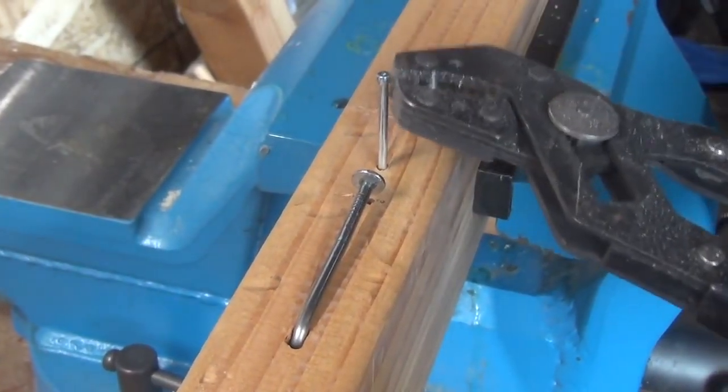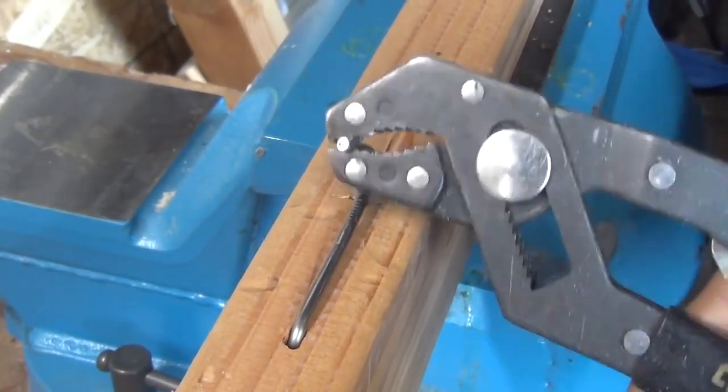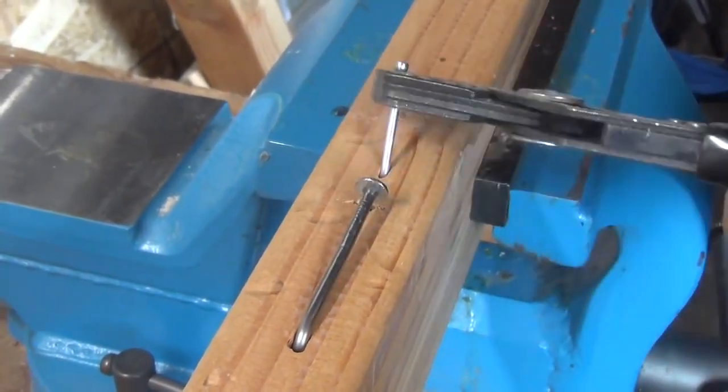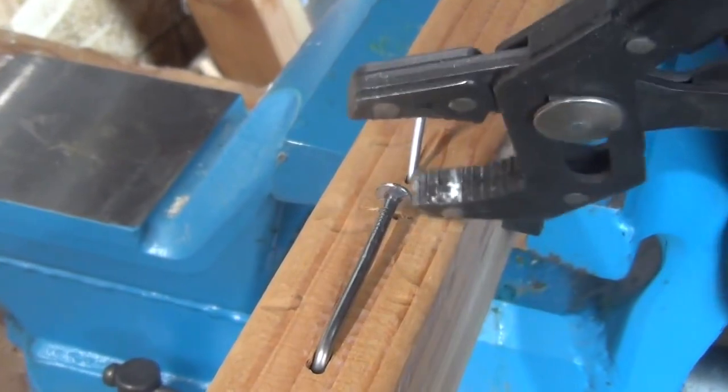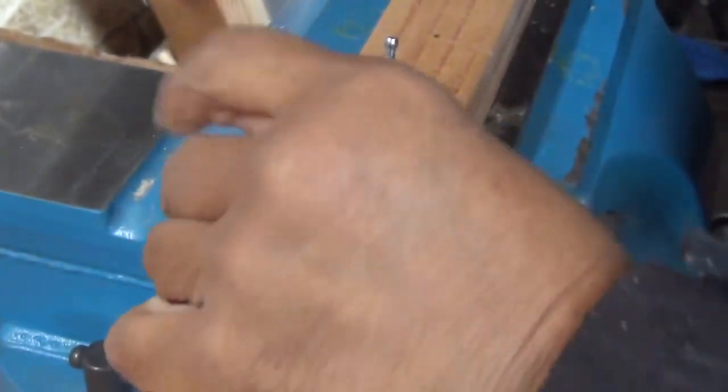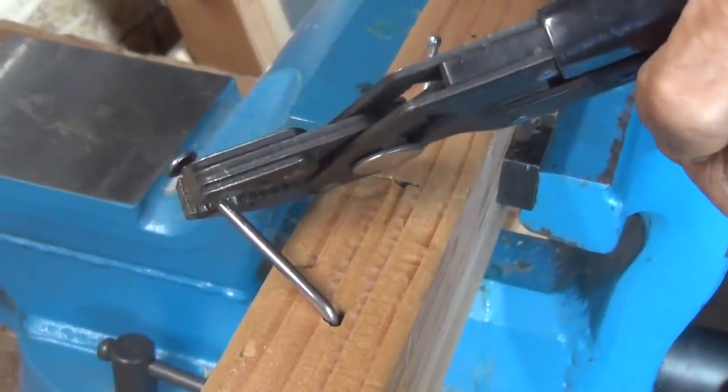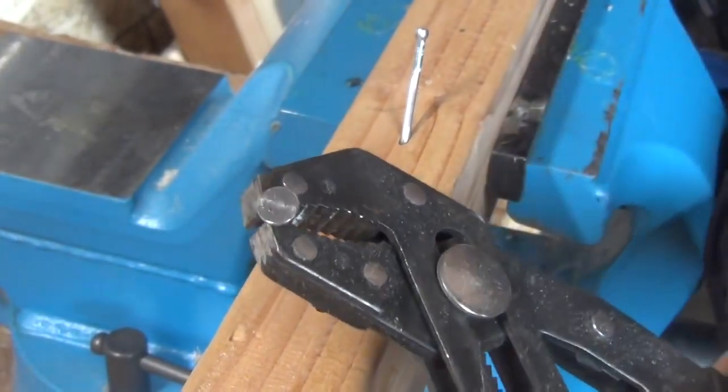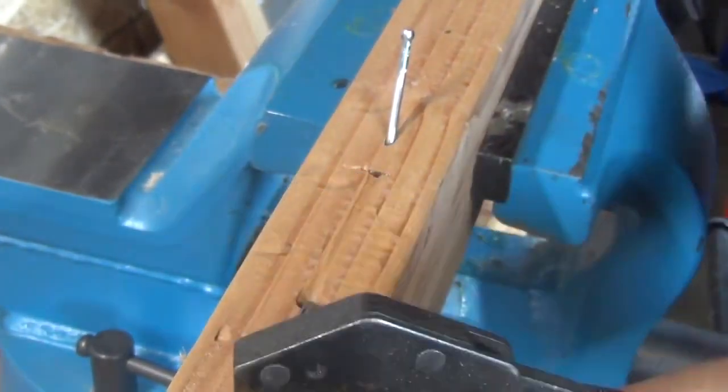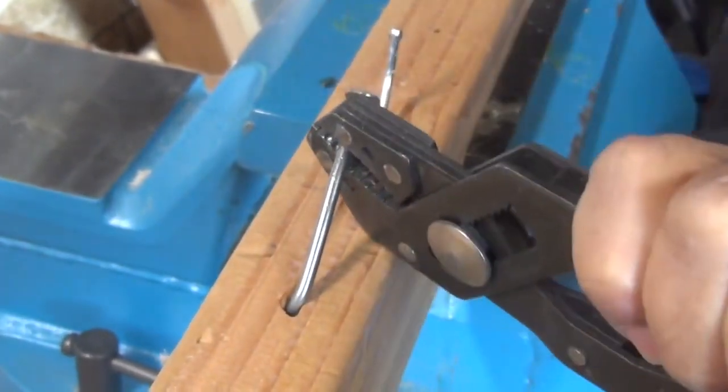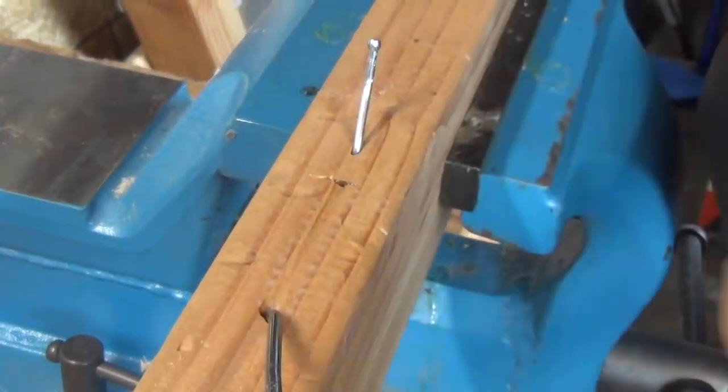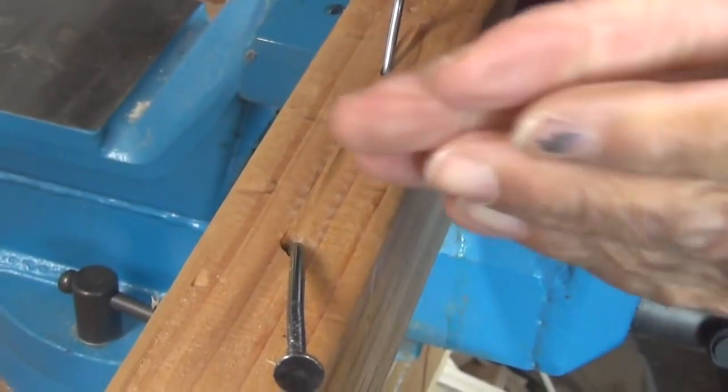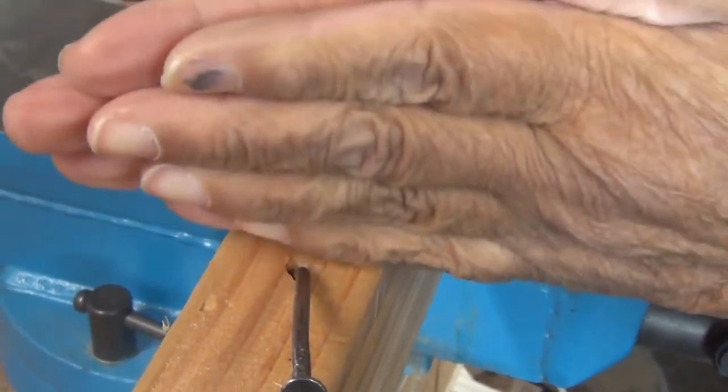So what I'll do is I'm going to take some pliers. I'm going to bend it back and forth. Notice that it doesn't break. I'll do the same thing with the nail that I just got finished bending. It bends. It gives. And that's why it's so good at shear strength.